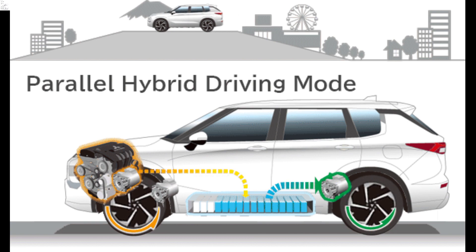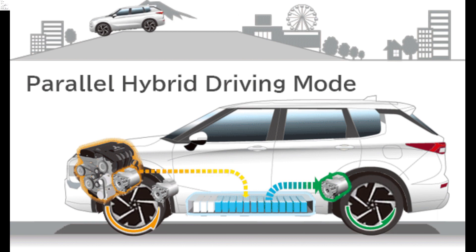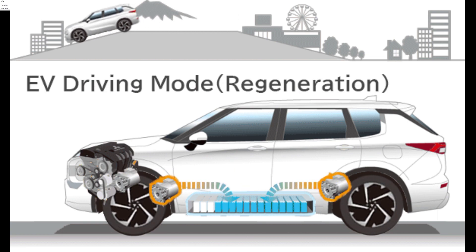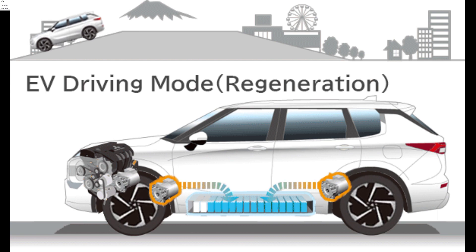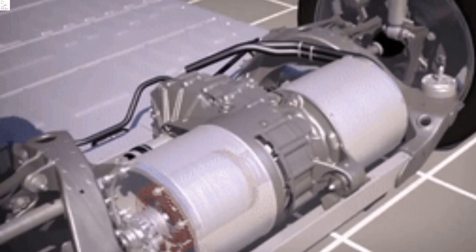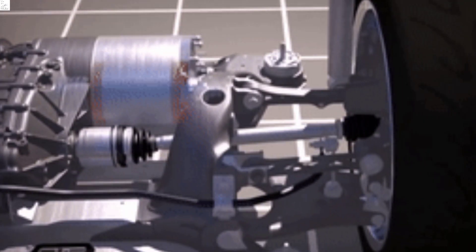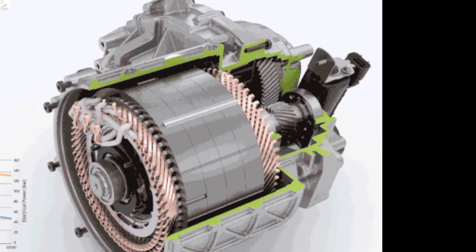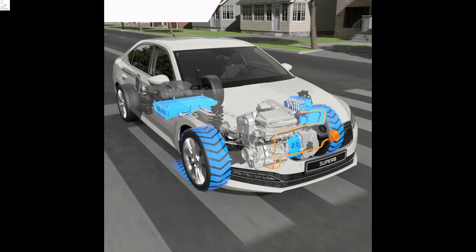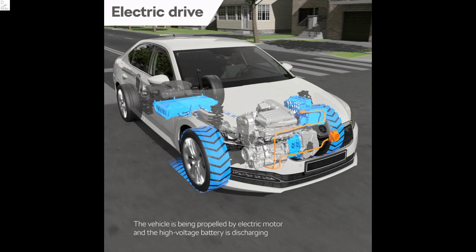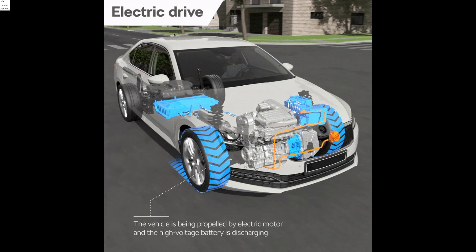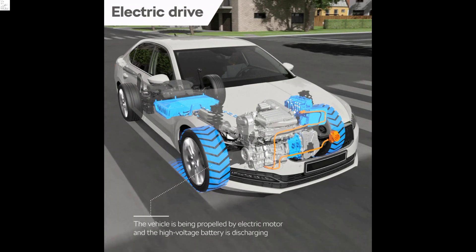3. Electric engine: electric engines, also known as electric motors, are used in electric vehicles (EVs). These engines run entirely on electricity and do not require any fossil fuels. They convert electrical energy stored in batteries into mechanical power to drive the vehicle. Electric engines are known for their high efficiency and zero tailpipe emissions.